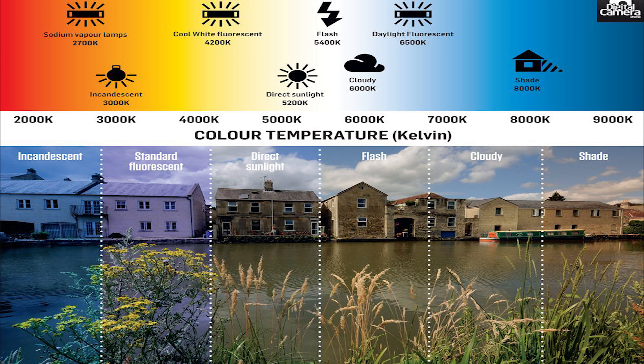5,200 to 6,500 Kelvin is your direct sunlight at noon on a clear sky day, and this light range is supposed to be the most accurate in terms of whites being white. Going higher, you start to enter a blue tinge, shooting your scene under cloud cover. And finally, at around 8,000K, you enter complete shade.